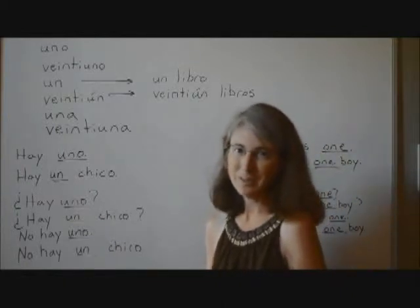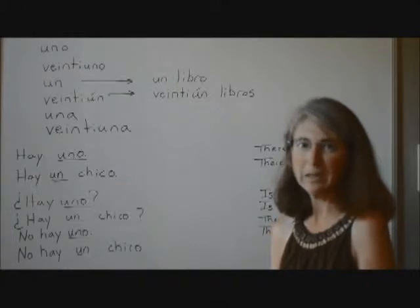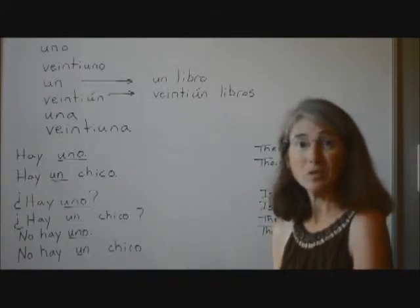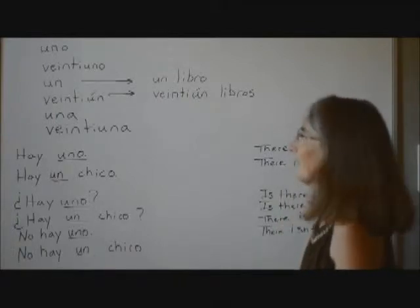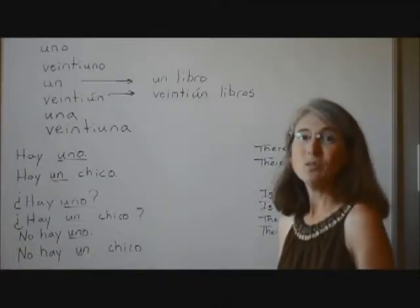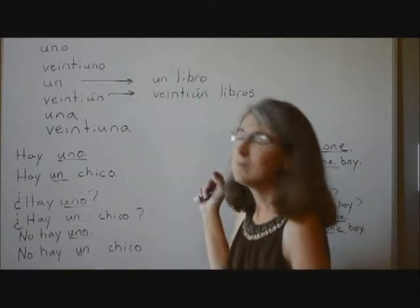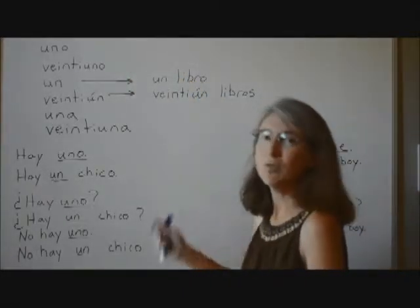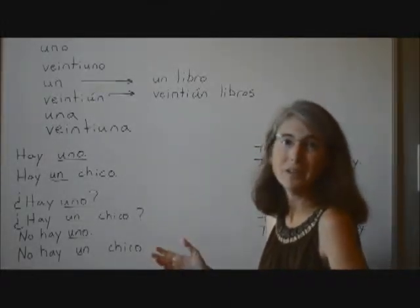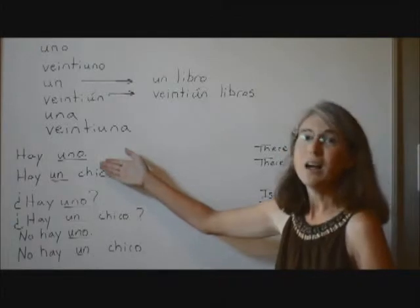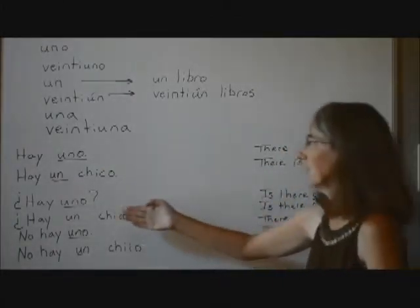Bienvenidos. Now we're going to learn about using the numbers that end in one to talk about quantity in Spanish. We talked in another video about how to express quantity, and numbers ending in the number one have a special attribute to engender with the noun they're talking about. So numbers like 1, 21, 31, 41 have a little different spelling than other numbers.